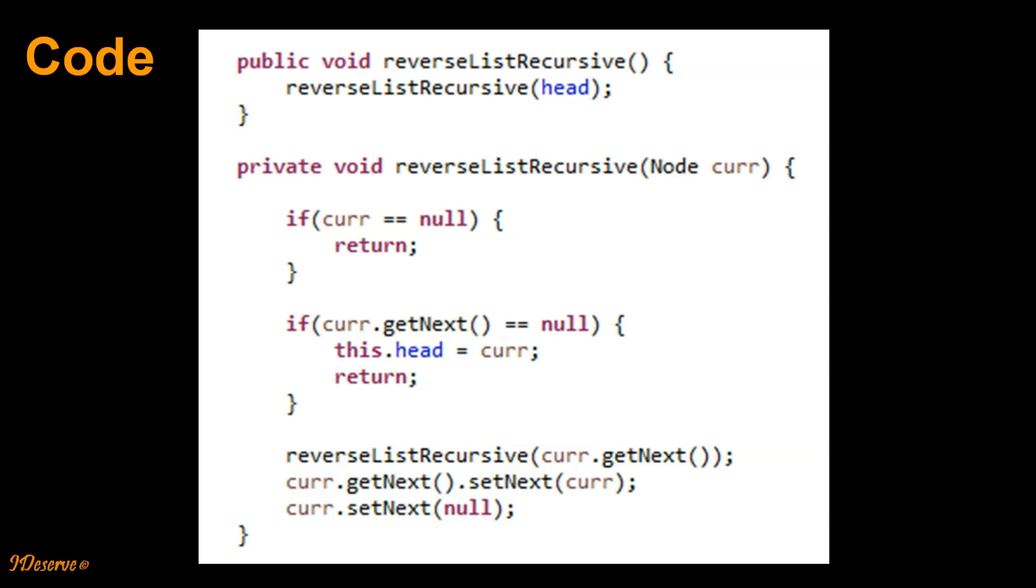Otherwise, what we do is reverse the linked list recursively. And once we have done the reversing of the linked list recursively, we go to steps 4 and 5, where we actually reverse the node pointers. I hope this is clear.